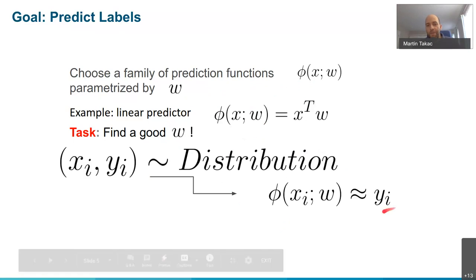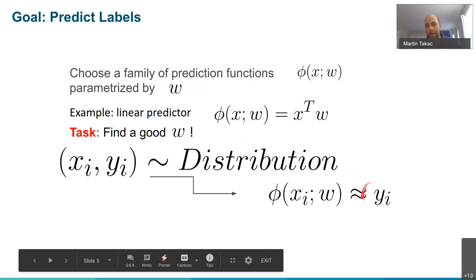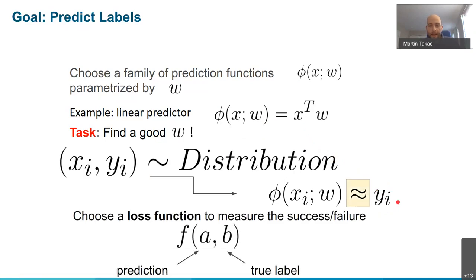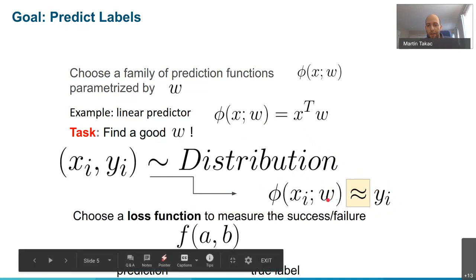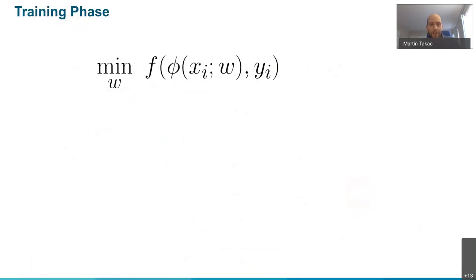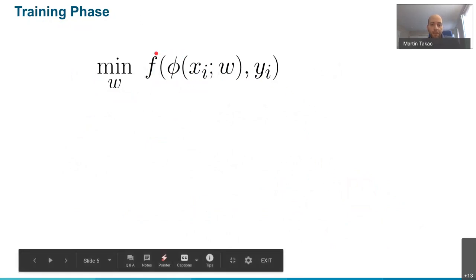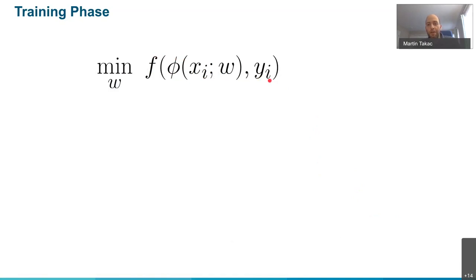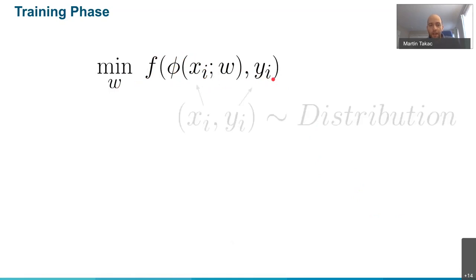My task would be: I want to find w such that if I get some new instance I will get the correct label. I need to also choose some loss function which is going to measure how close my prediction is going to be to the true label. For example, I can just take the squared norm, which is maybe the simplest example of the loss function. But there are also much more fancy ones which people are using. In the training phase, I want to find w such that the loss - basically the disagreement between my prediction and the true label - will be minimized.